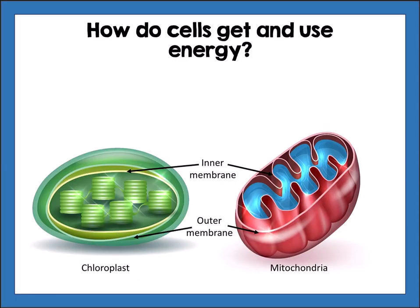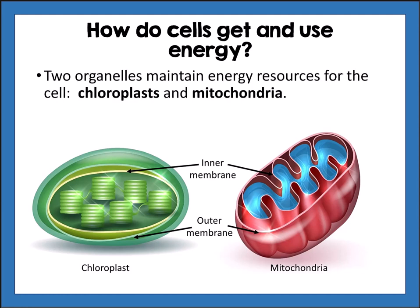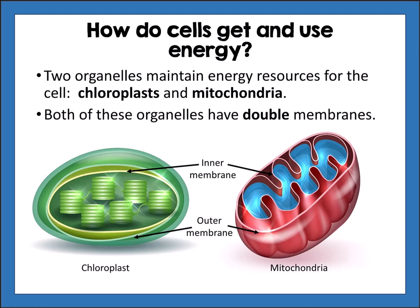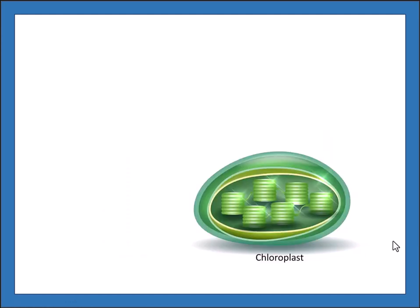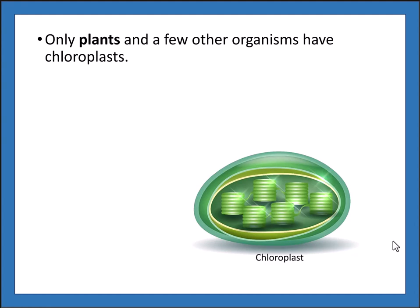In this section we're talking about how cells get and use energy and the cell's boundaries. There are two organelles that maintain energy resources for the cell: chloroplasts and mitochondria. One characteristic of life is that organisms use energy, and these two organelles are responsible for that. Both chloroplasts and mitochondria have double membranes — an inner membrane and an outer membrane.